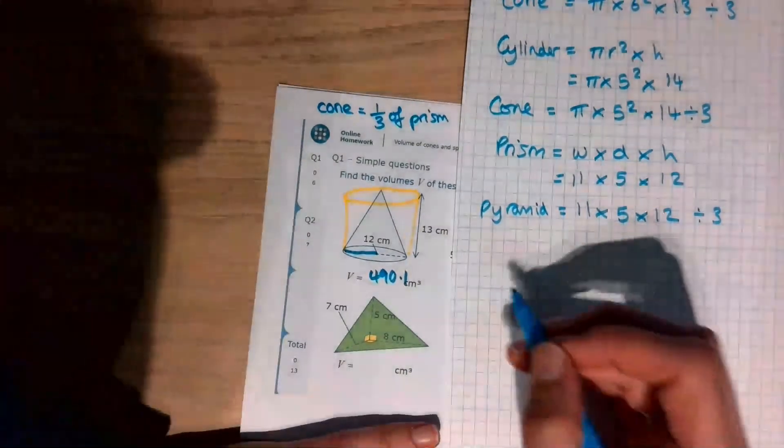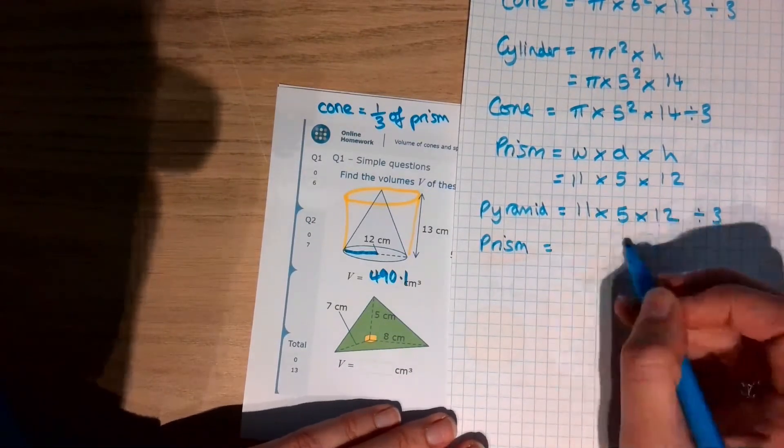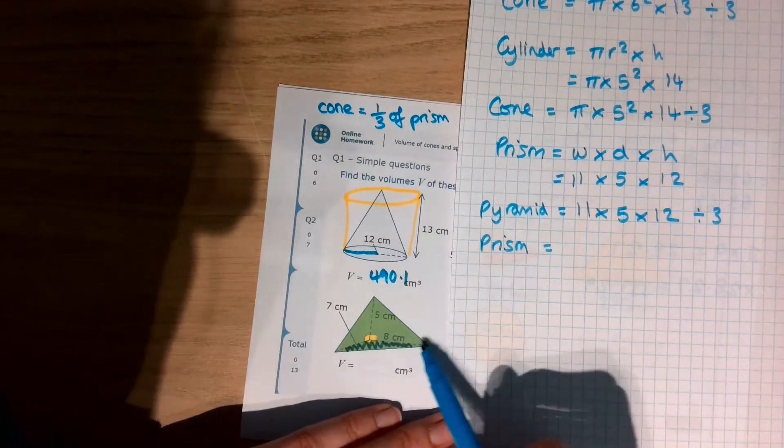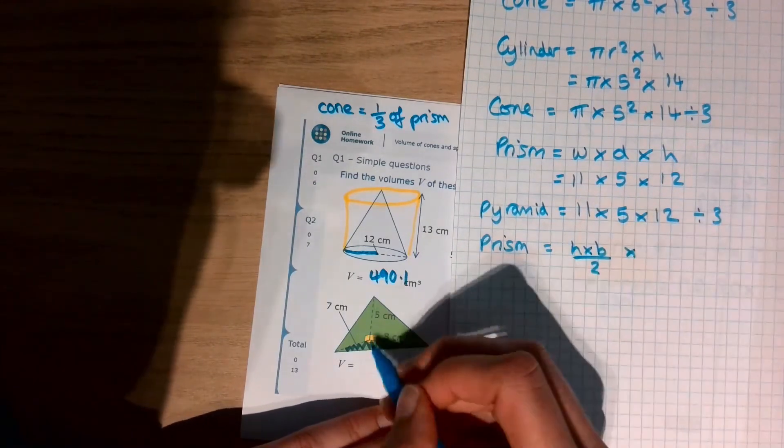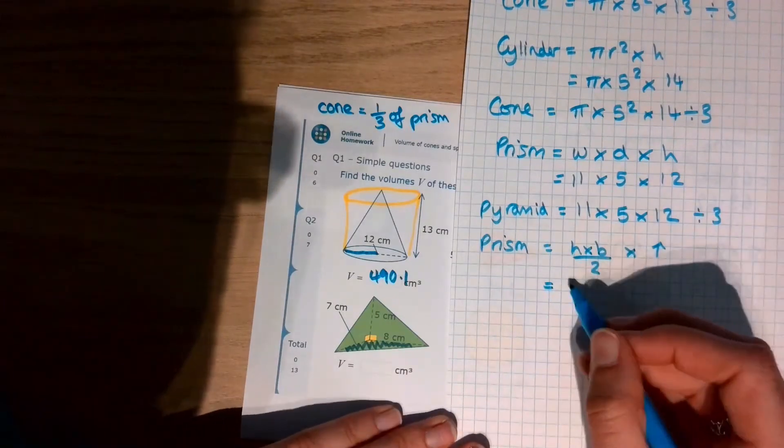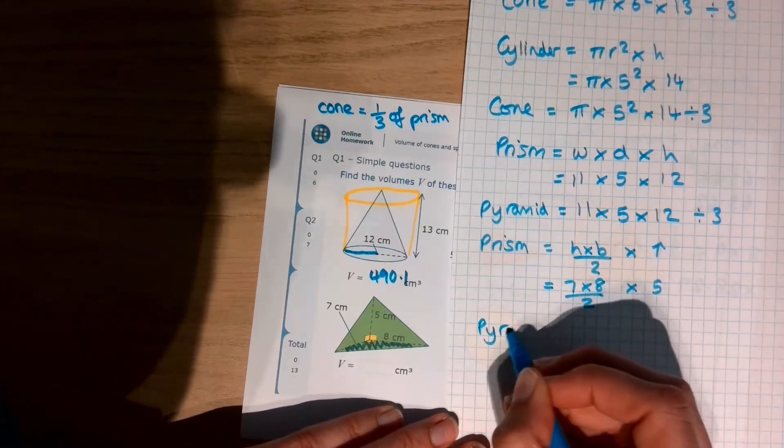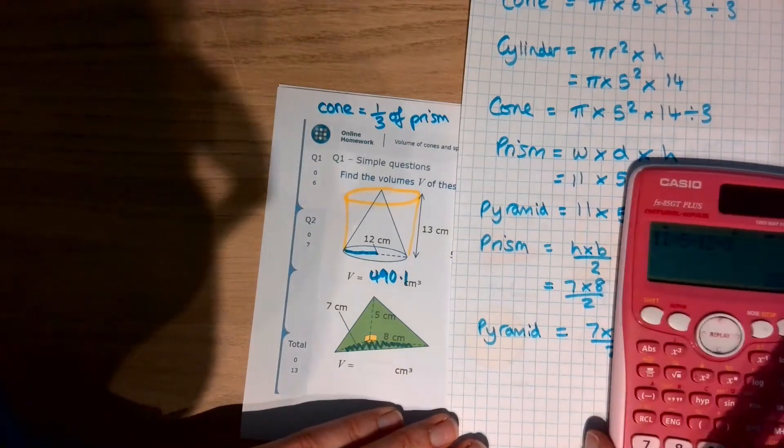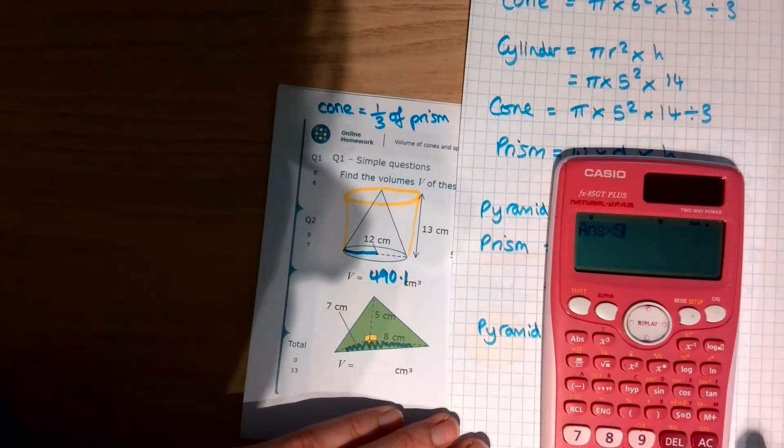We now have a triangular base pyramid. First of all, think about a triangular prism, which would be the area of the triangle times by the height. So the triangle at the bottom, it's really important to make sure we're looking at the base here, is 7 times 8 divided by 2 times by the height of the pyramid, or the prism, if we think about it that way. So, it's going to be 7 times 8 divided by 2 times by 5. But then, of course, we're not interested in the prism, we're interested in the pyramid, which means it's 7 times 8 over 2 times 5. You can do this in several steps if you want to, that's absolutely fine. So, we can think about 7 times 8, we can then divide that by 2, we can times it by the 5, and then we can divide it by the 3.